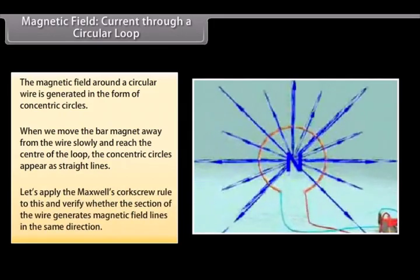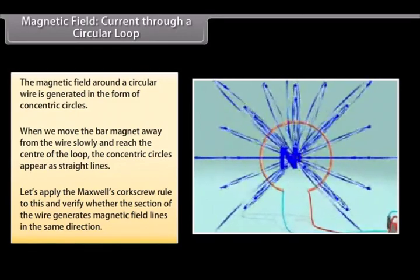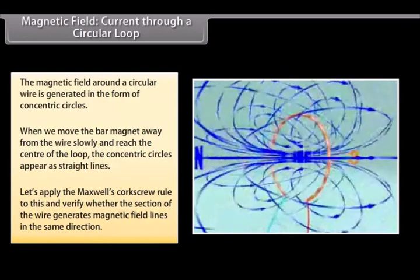Now try applying Maxwell's Corkscrew rule to this and check whether every section of the wire is able to generate magnetic field lines in the same direction.